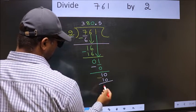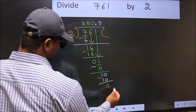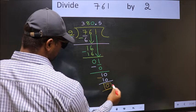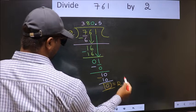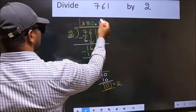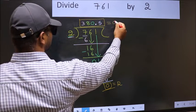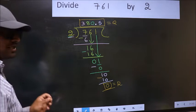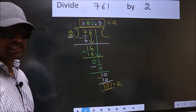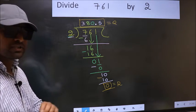Now, you subtract. 10 minus 10 is 0. So, this is our remainder and this is our quotient. Did you understand where the mistake happens? You should not do that mistake.